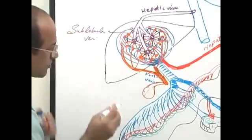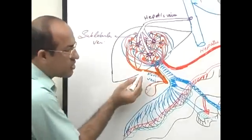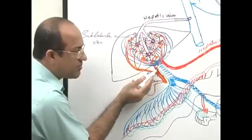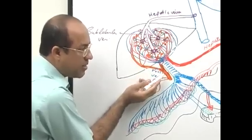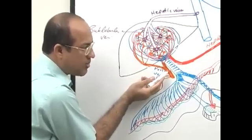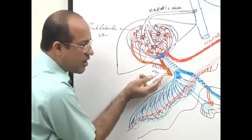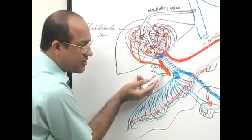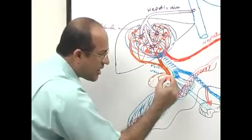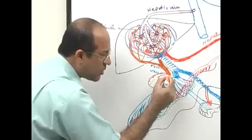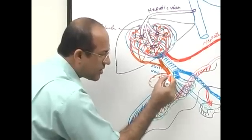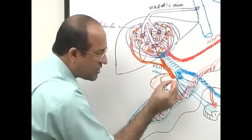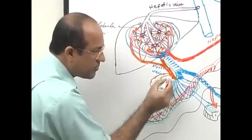The cystic duct from the gallbladder meets the common hepatic duct, converting into the common bile duct, which goes down toward the duodenum.